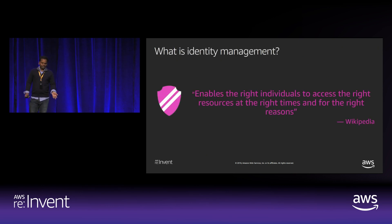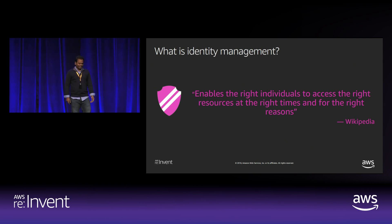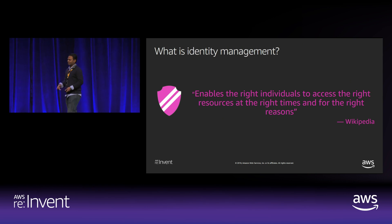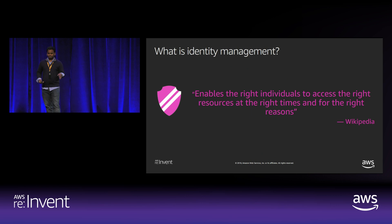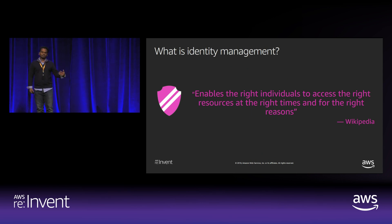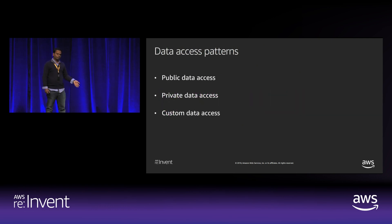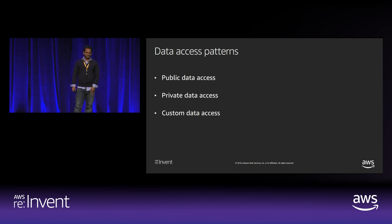So, what is identity management? I borrowed this quote from Wikipedia, but it very accurately articulates what it is: it basically enables the right individuals to access the right resources at the right time for the right reasons. With this in mind, there are three types of access patterns for application data: public data access, private data access, and custom data access.